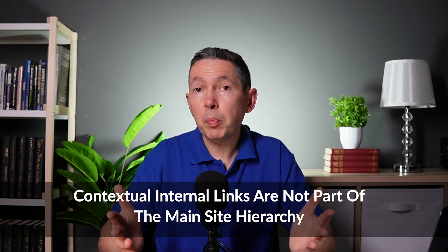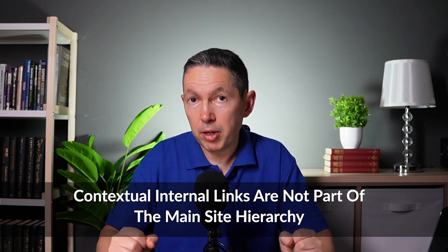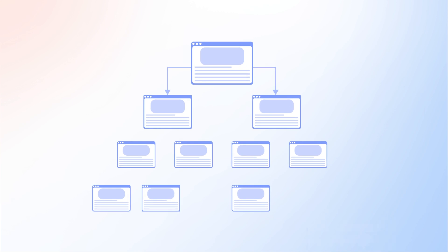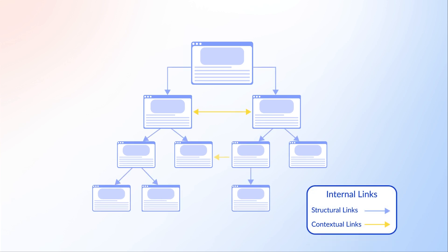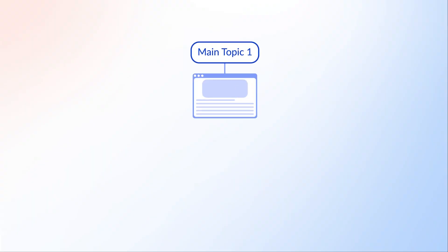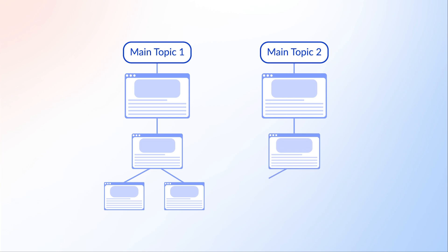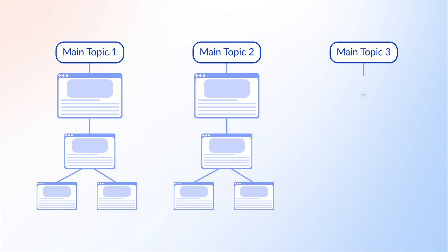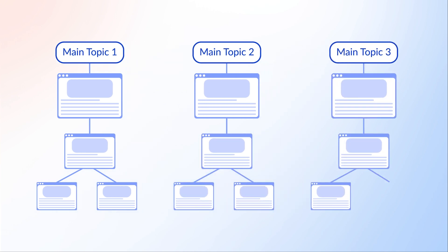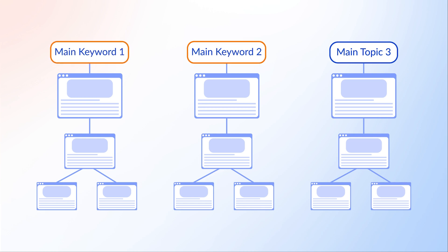Contextual internal links are not part of the main site hierarchy, but they do create their own structure by interconnecting pages. Internal links should be used to connect all the subpages of a topic to the main topic. The topic clusters will form their own hierarchies resembling pyramids. The top pages should cover the main keywords, and the lower pages in the structure should cover the related keywords.